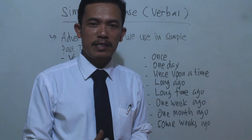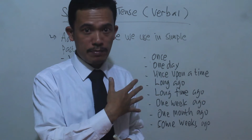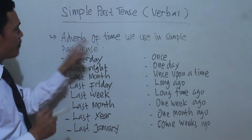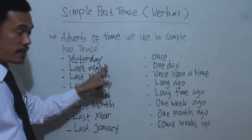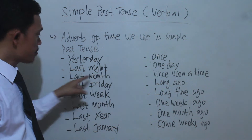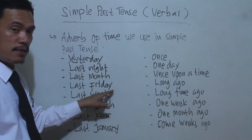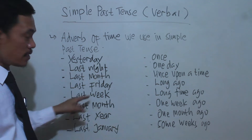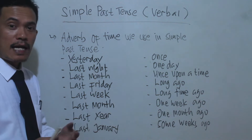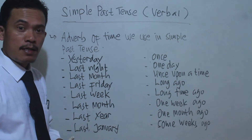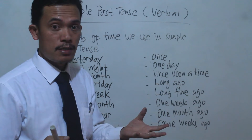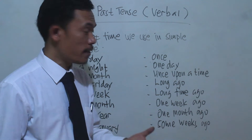To express simple past tense, we also use time expressions. The times we use include: yesterday (kemarin), last night (semalam), last month (bulan yang lalu), last Friday (hari Jumat yang lalu), last week (minggu yang lalu), last year (tahun yang lalu), last January (Januari yang lalu). We also use these when telling a story, sharing an experience, or telling a narrative.